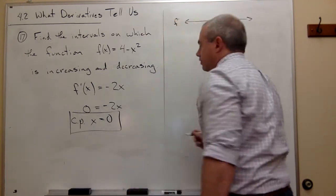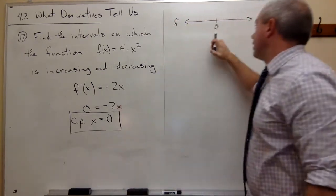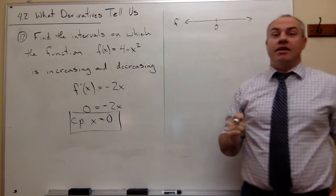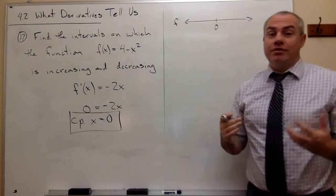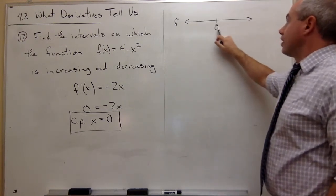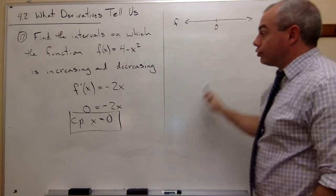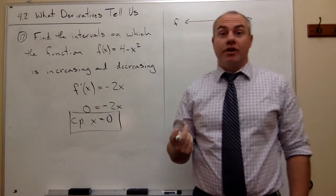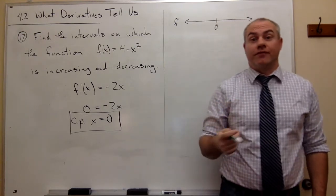Now what I want to do is test points on either side of 0 to see do I get a positive value or a negative value when I plug in something on either side of 0 to the first derivative. I'm not plugging it into the original function, I'm plugging it into the first derivative.